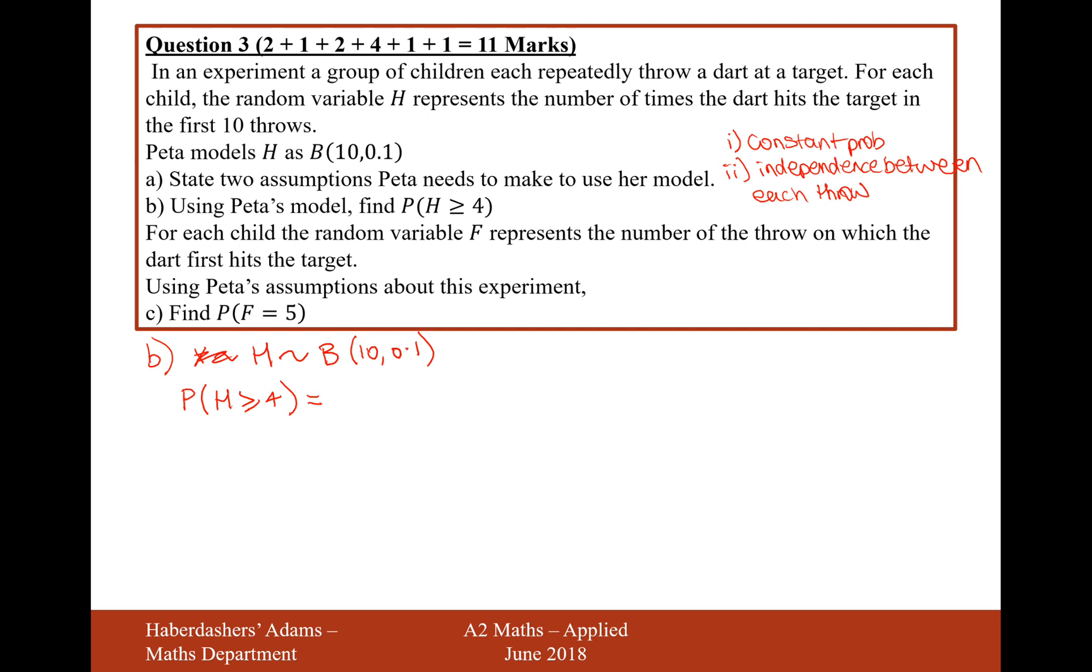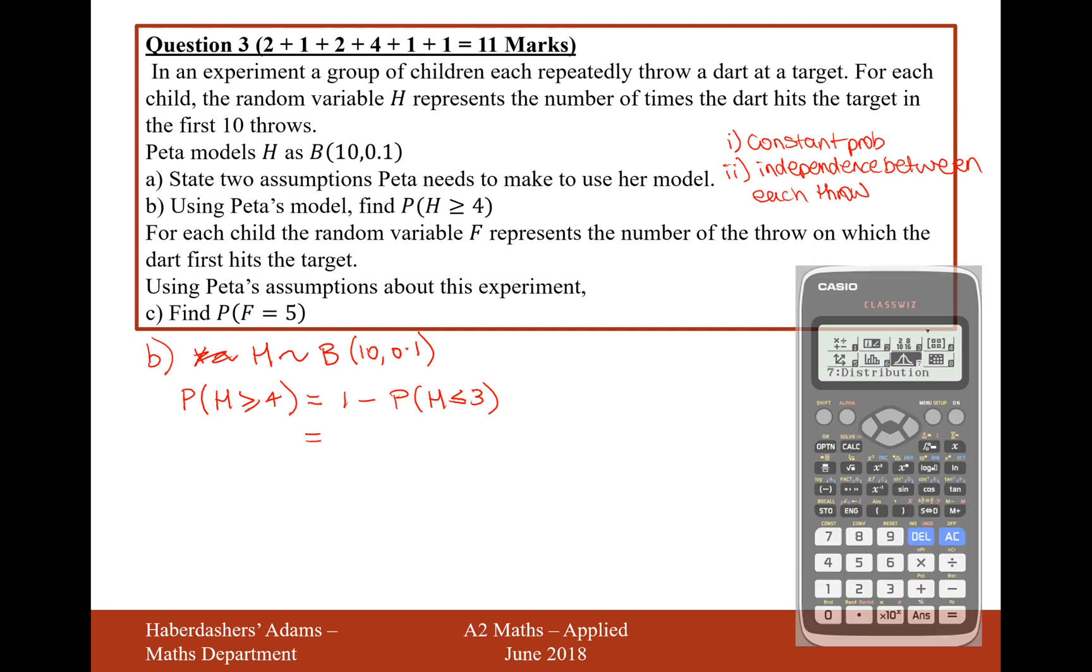And we want to find the probability H is greater than or equal to 4. Now unfortunately, in our calculator, it doesn't really have a mode to select a certain amount of successes or more. But what it does have is a way of calculating the number of successes or fewer. So actually, what we'll do is 1 minus the probability of H is less than or equal to 3. This is saying work out the probability that the child will hit the dartboard three or fewer times, and then work out the opposite probability to it by doing 1 minus it.